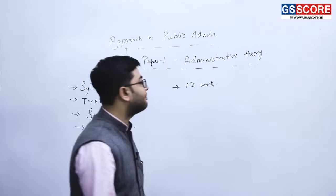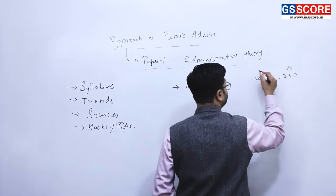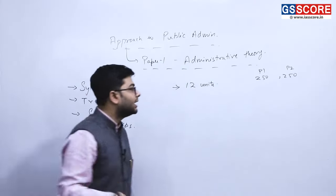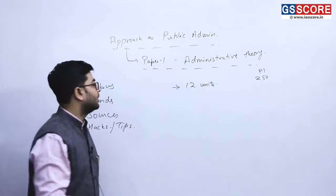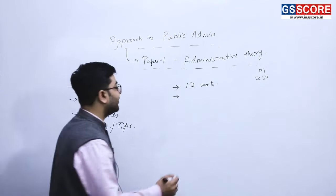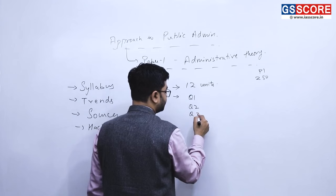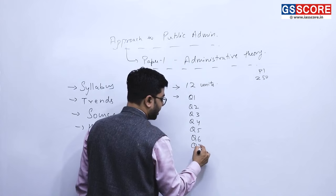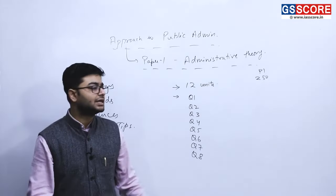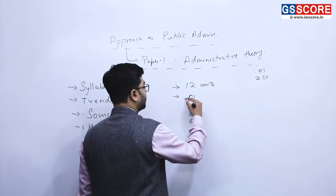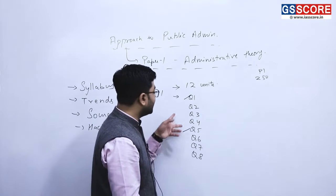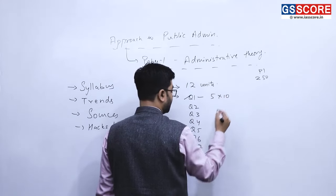In the mains examination, each paper is of 250 marks. The examination consists of eight macro questions — this has been the consistent structure for several years. Question number one and five are compulsory, each containing five sub-questions of 10 marks each.